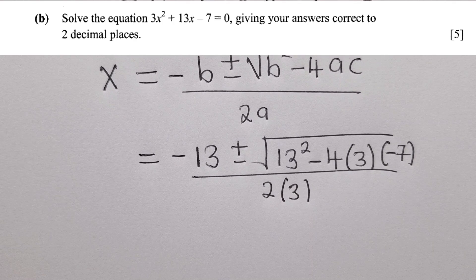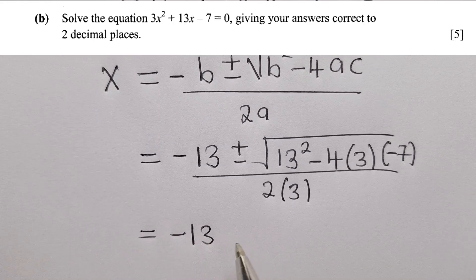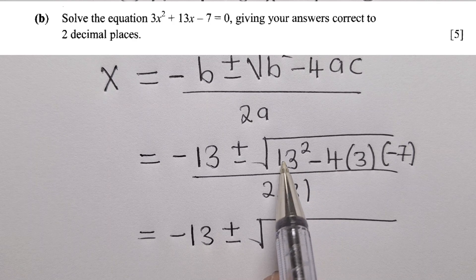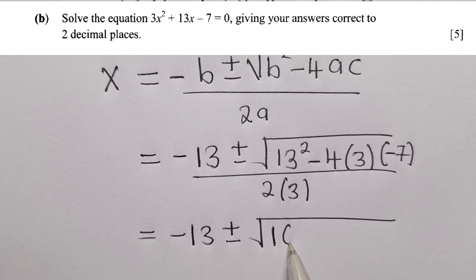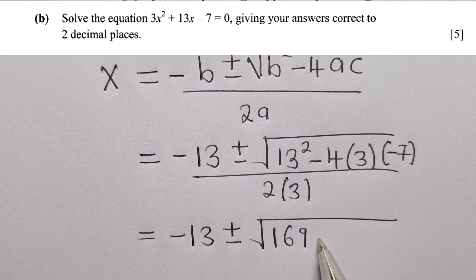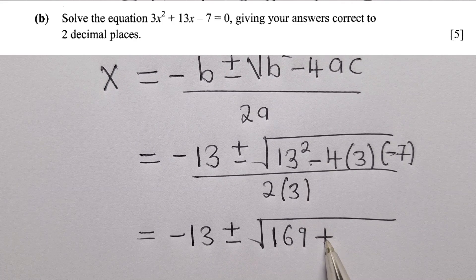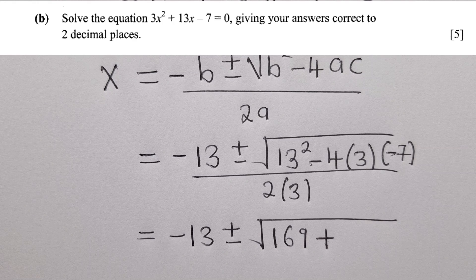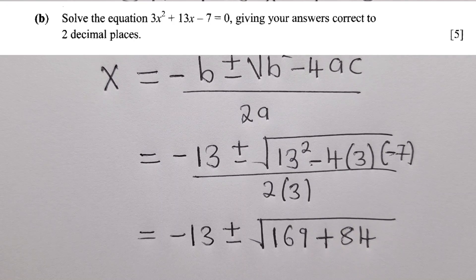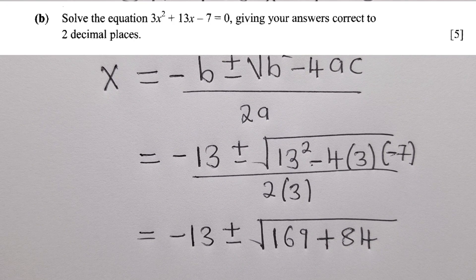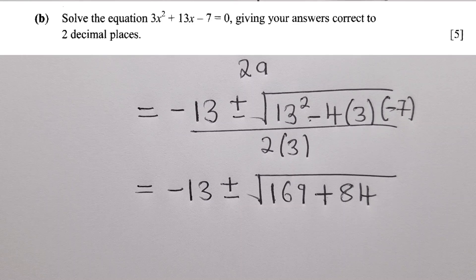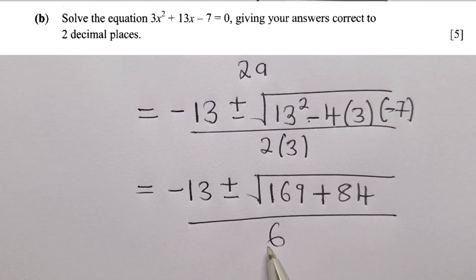So we just simplify here. We are maintaining negative 13, plus or minus. Here, square root over, first we shall say, what is 13 squared? This is 169, because 13 times 13. And then we say plus. This negative and the negative here, they'll give us positive. So now we multiply the numbers, 4 times 3 times 7. It will give us 84. Or if you want, you can start with negative 4 times 3 times negative 7. You still get a positive 84. And when you get this positive 84, you go to the denominator. This is 6.